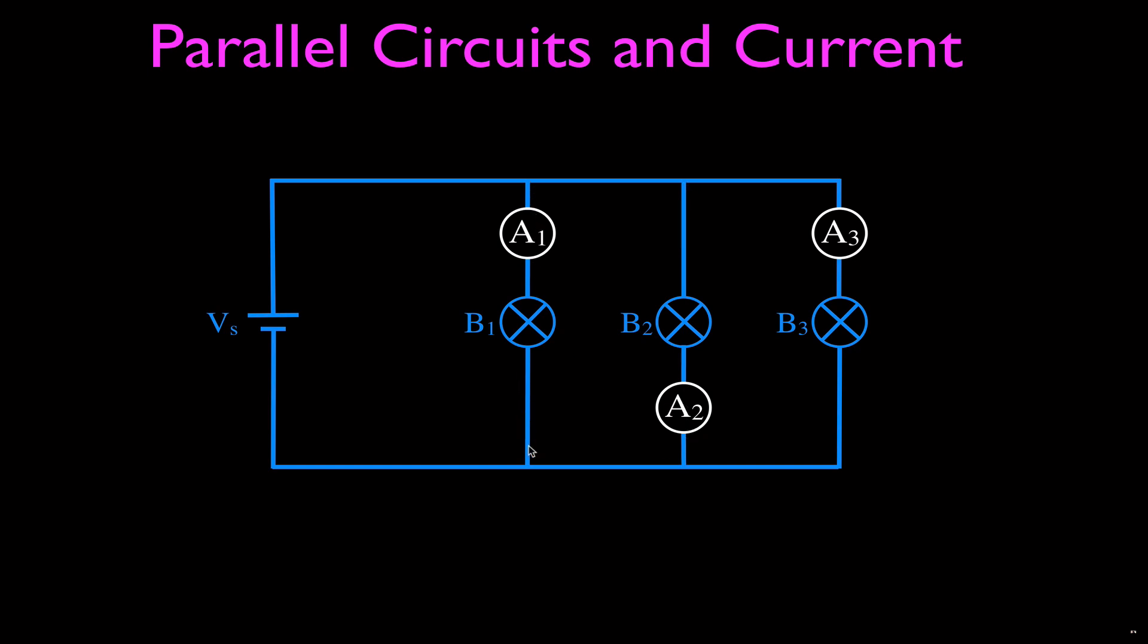The current is the same throughout this entire branch. The current is the same throughout this whole entire branch here. So it doesn't matter where we put the ammeter for each branch as long as we put it in line with each branch.